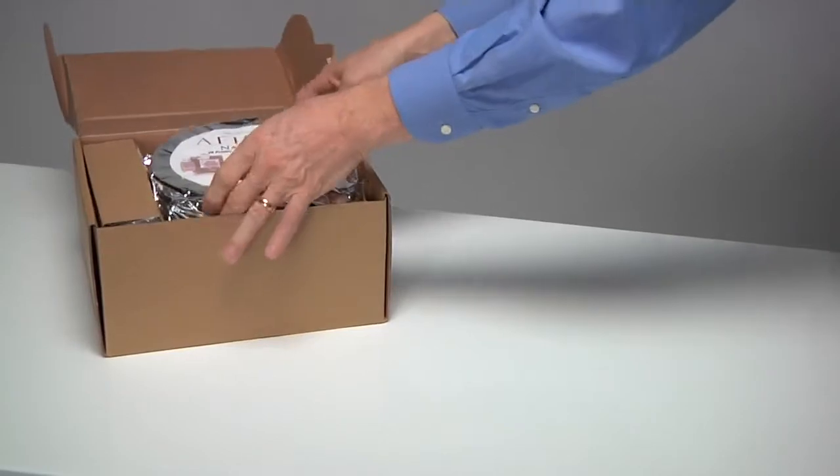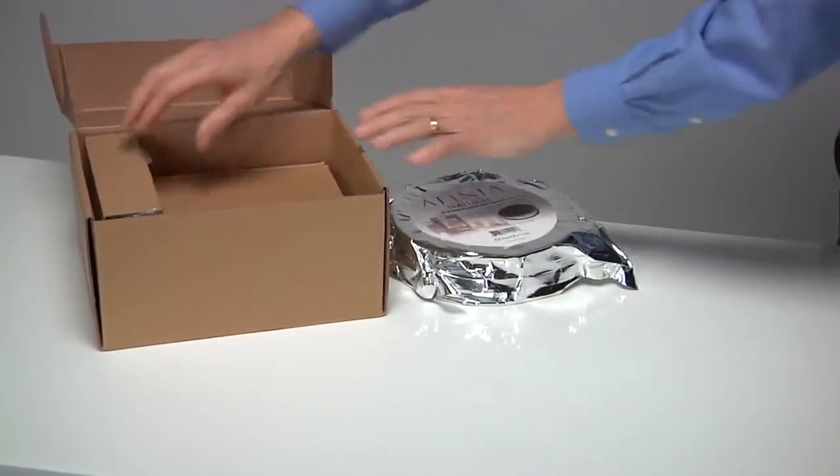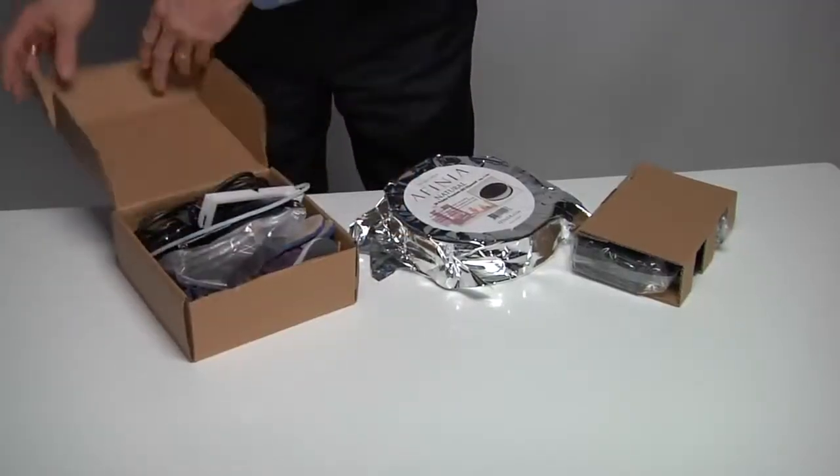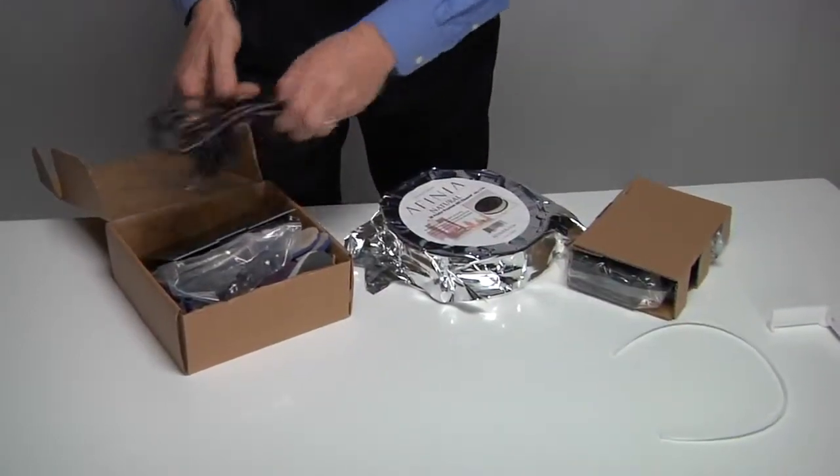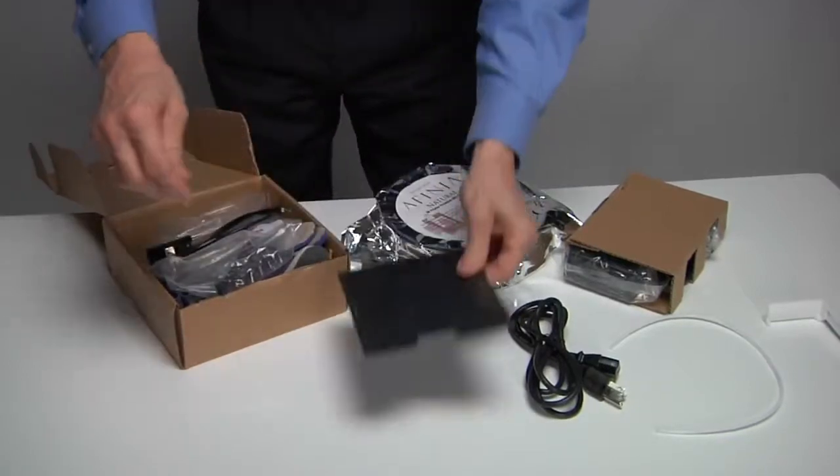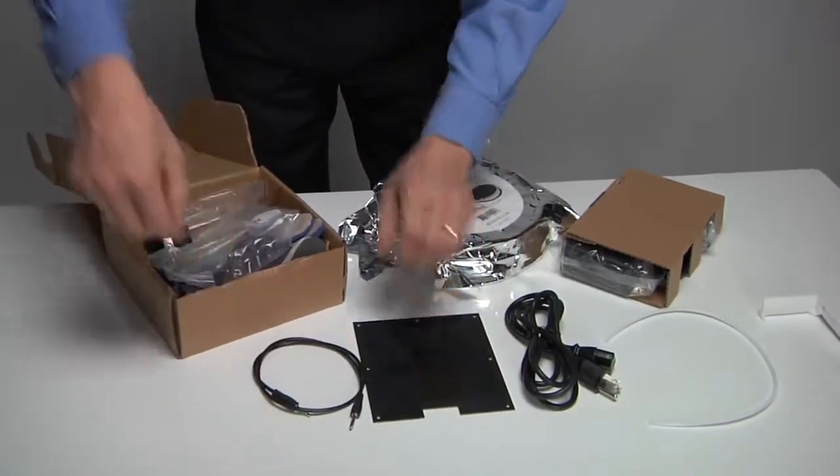Open the accessory box and remove the filament spool and power supply. Open the inner box and remove the filament hanger, filament tube, power cable, perf board, data cable, hex wrenches, platform calibration probe, and USB cable.